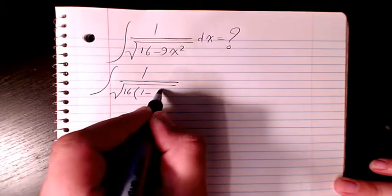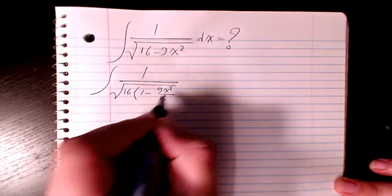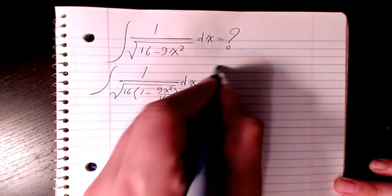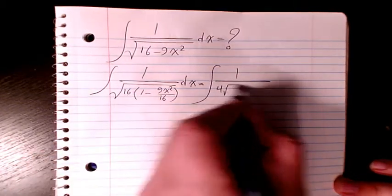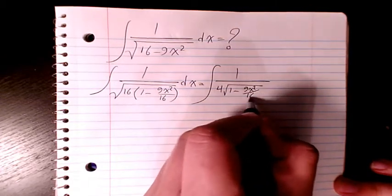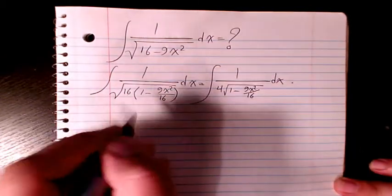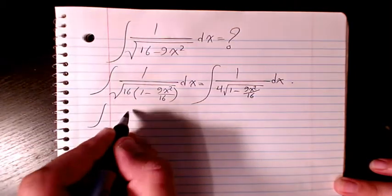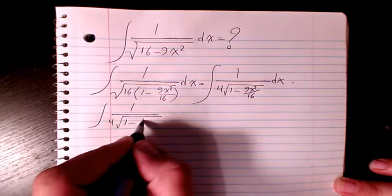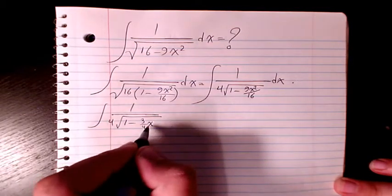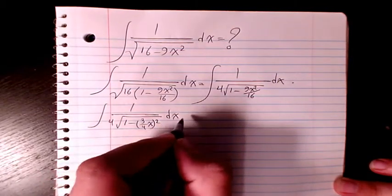be 1 minus 9x squared divided by 16 dx, which will be when you take it out it's going to be 4, 1 minus 9x squared divided by 16 dx, or you can say 1 over 4 square root of 1 minus 3 over 4x squared dx.